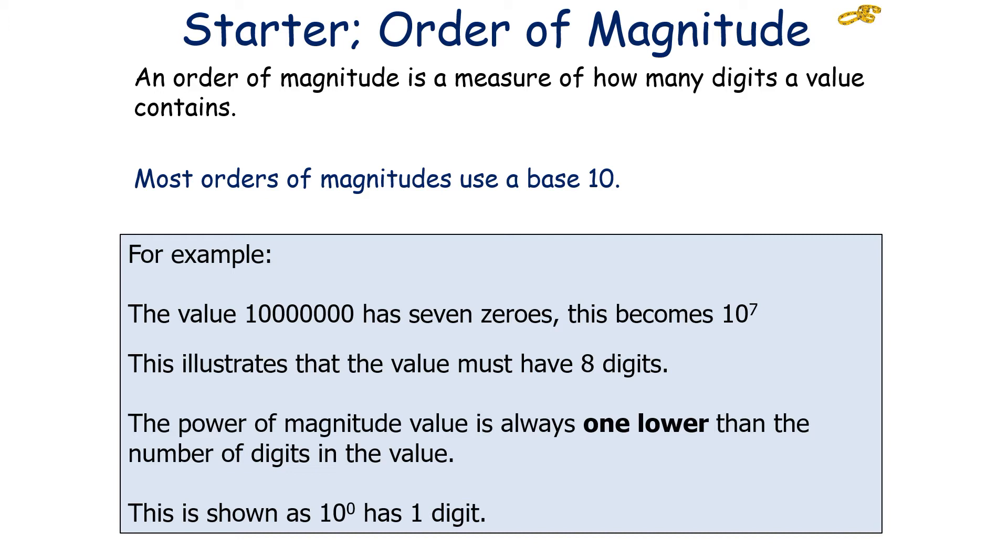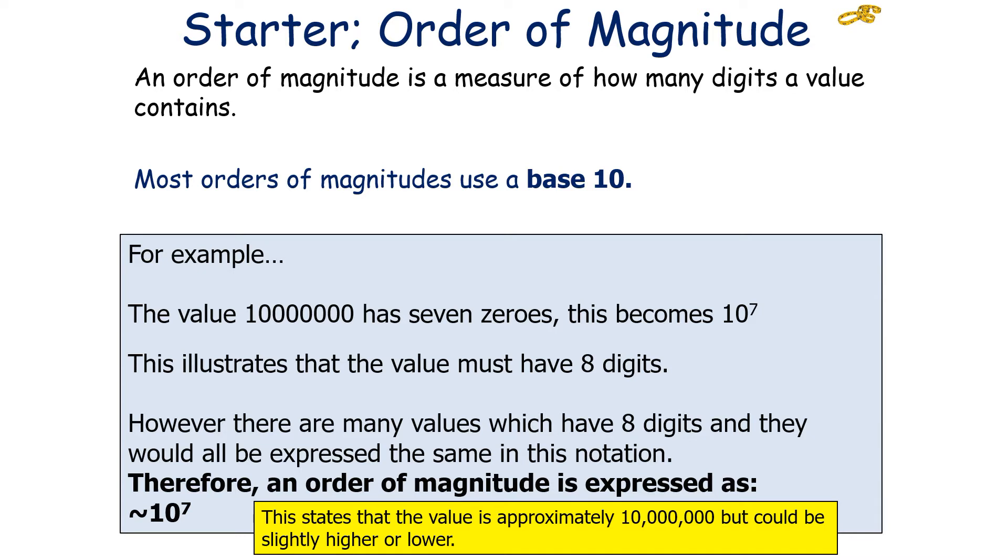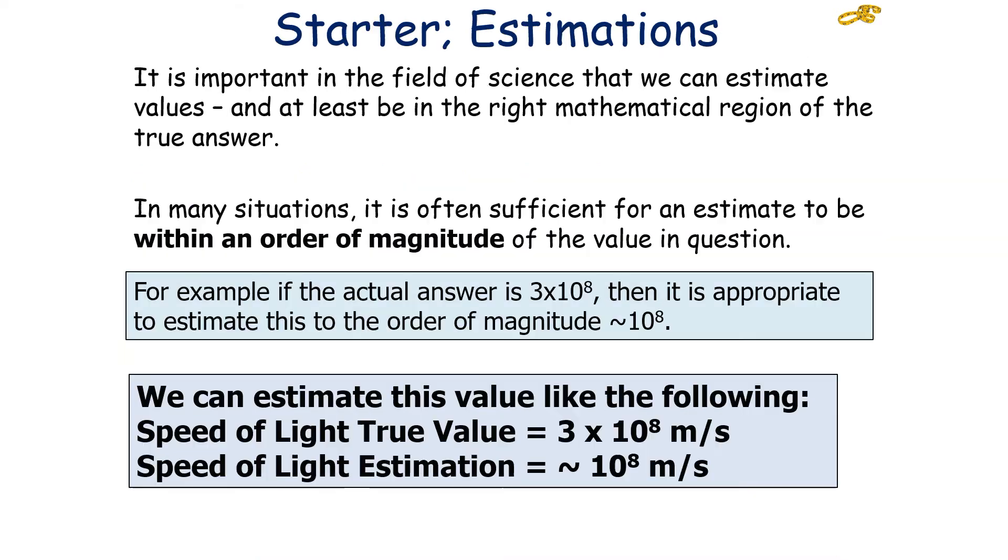This illustrates that this value must have 8 digits, because the power of magnitude value is always 1 lower than the number of digits in the value. This is shown because 10 to the 0 has 1 digit, because 10 to the 0 equals 1. This means we can express an order of magnitude as 10 to the something. So you could say an order of magnitude of a quantity is 10 to the 7. This states that the value is approximately 1 and 7 zeros, 10 million, but it could be slightly higher or it could be slightly lower. It's an approximation or an estimation.